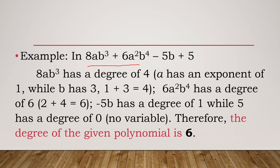For example: 8ab³ + 6a²b⁴ - 5b + 5. Here we have two variables, a and b. In the first term 8ab³, a has exponent 1 and b has exponent 3, so 1 + 3 = 4. The degree of the first term is 4. Note that when an exponent is not written, it is automatically 1.